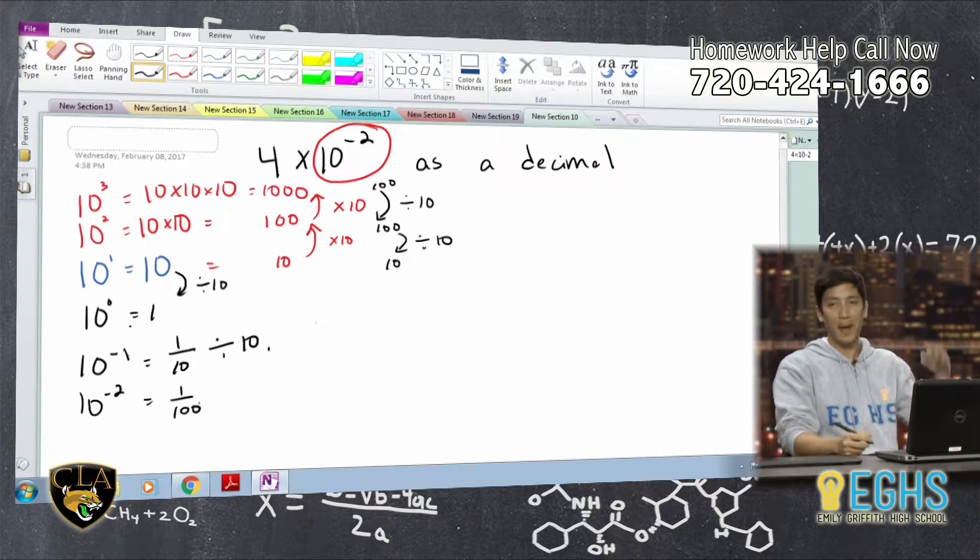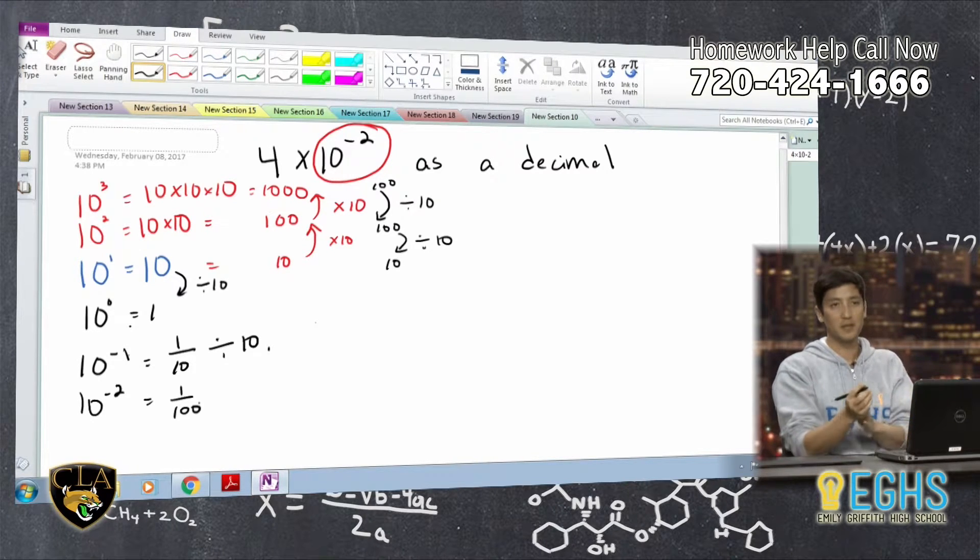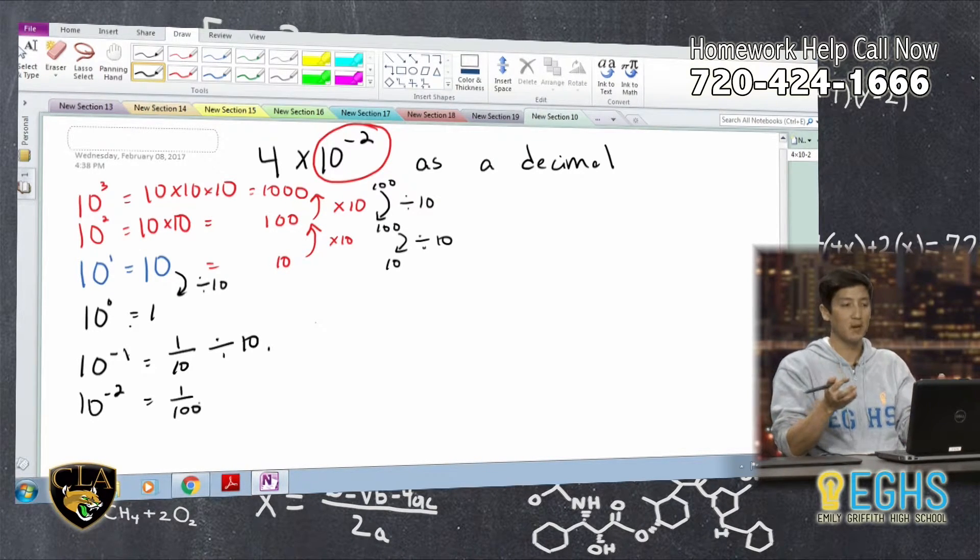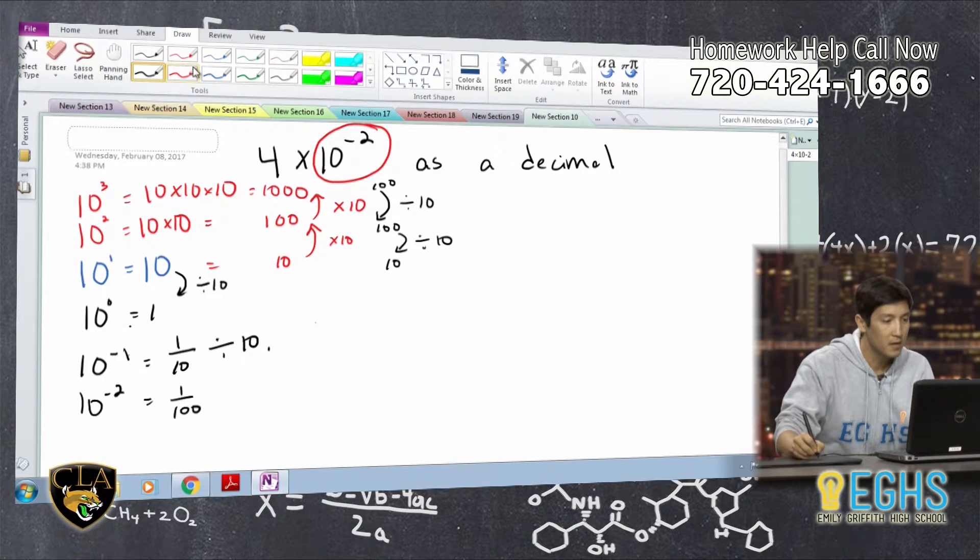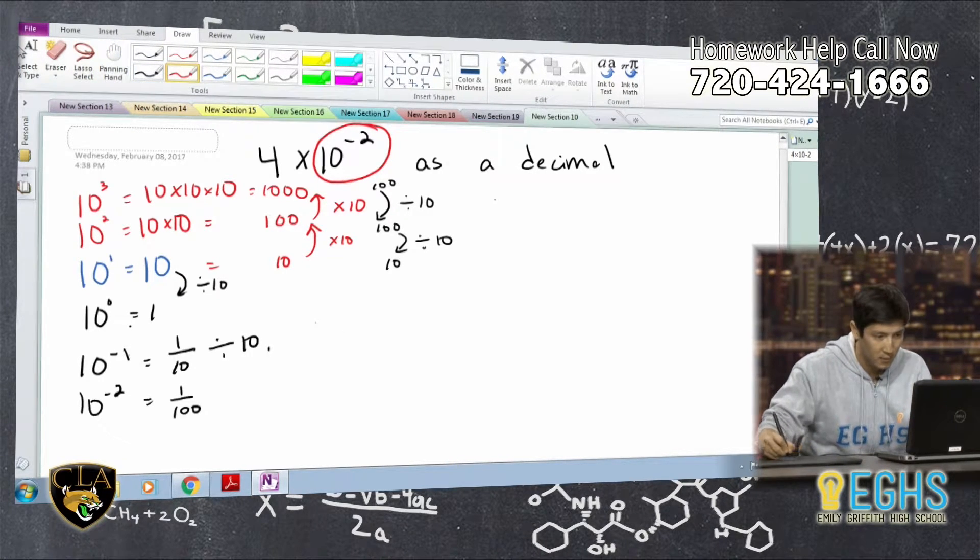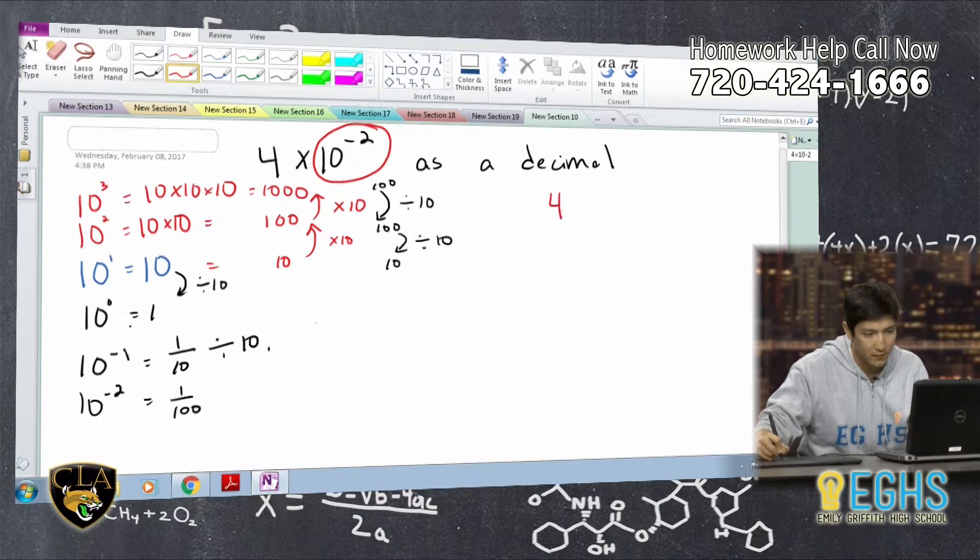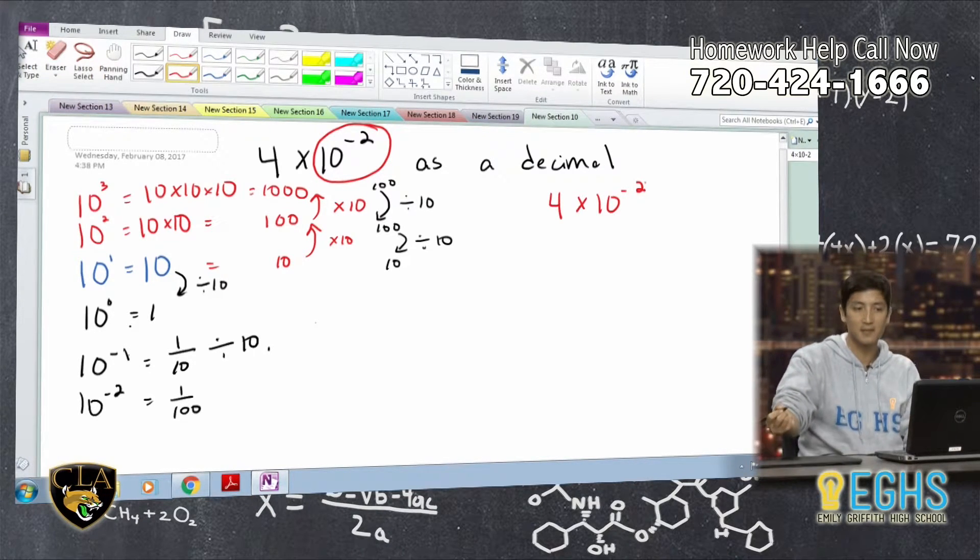So that pattern is, I think, really helpful to see because it helps you understand what is happening with this pattern when we say 4 times 10 to the negative second. So the way that we do that, I'm going to move this all over here. And we say 4 times 10 to the negative second as a decimal.